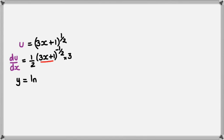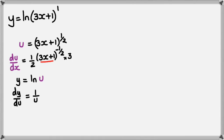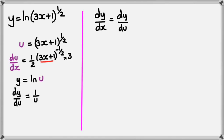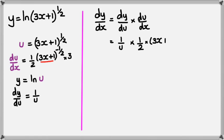Because u = (3x+1)^(1/2), I can say y = ln(u), which means dy/du = 1/u. By the chain rule, dy/dx = dy/du × du/dx. I already have dy/du = 1/u, multiplied by (1/2)(3x+1)^(-1/2) times 3.